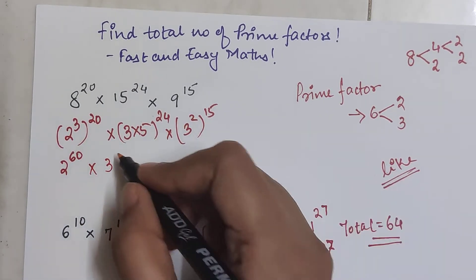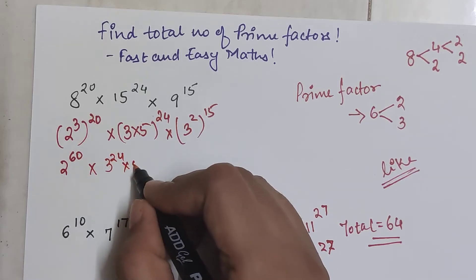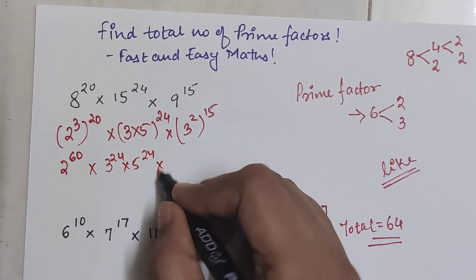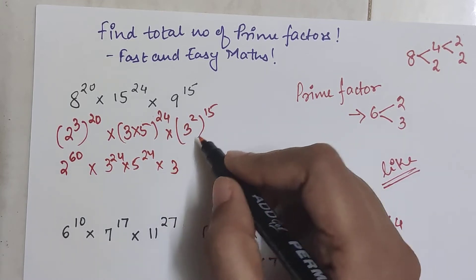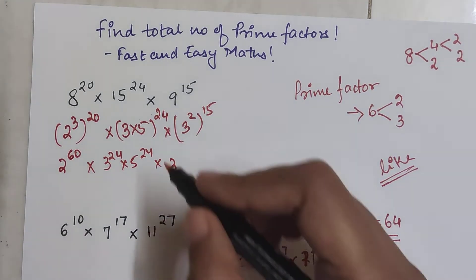This can be written as 3 raised to 24 into 5 raised to 24 into 3 raised to 2 the whole raised to 15, which can be written as 3 raised to 2 into 15, that comes out to be 30.